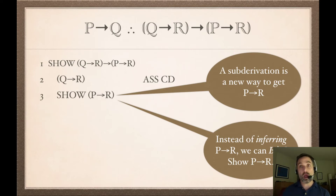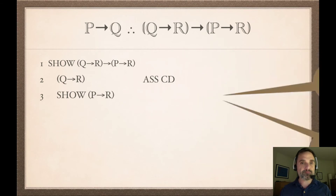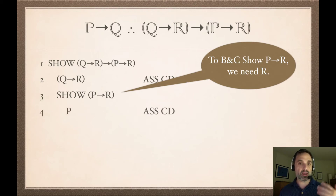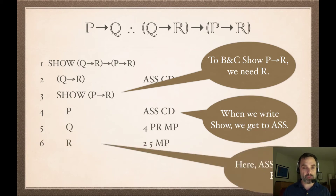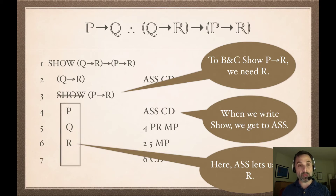You want to think of sub-derivations as choosing what you want — of course you have to actually complete the sub-derivation so it must be wisely chosen, but you think: what do I want, what would be helpful? So once you say show 'if P then R,' to box and cancel that show line we need R. We make an assumption for a conditional derivation. We do modus ponens with P and the premise, which gives us Q, and then Q with modus ponens gives us R — which is what we're looking for. So the assumption lets us box and cancel line 3 with CD.